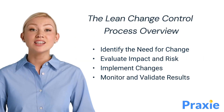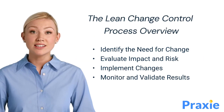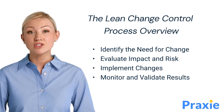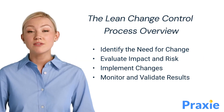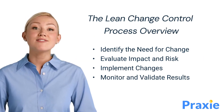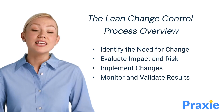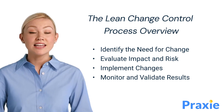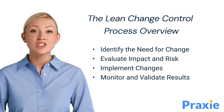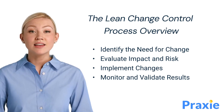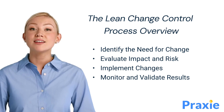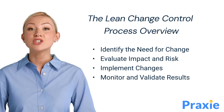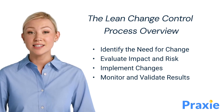The lean change control process follows a structured approach. First, we identify the need for a change, evaluate the potential impact and risks, implement the change, and finally, monitor and validate the results to ensure success.